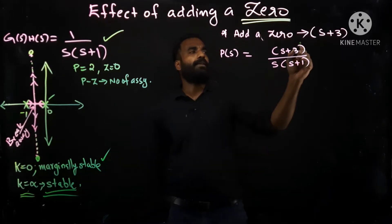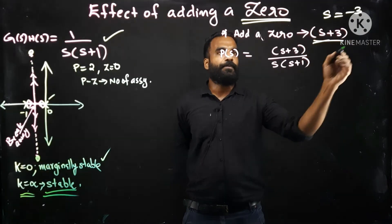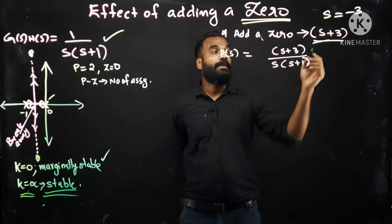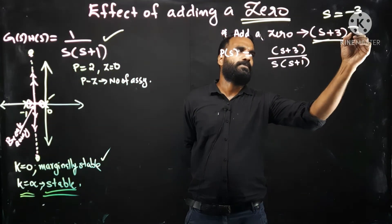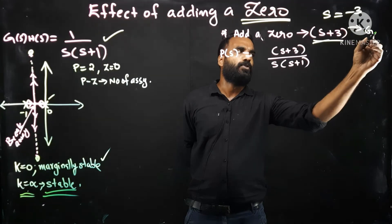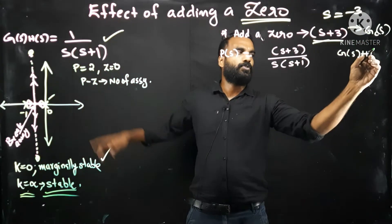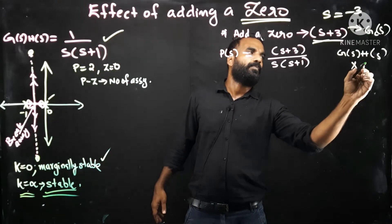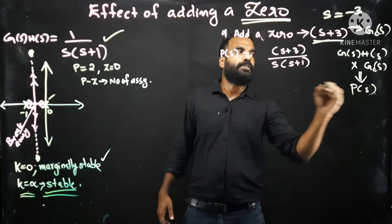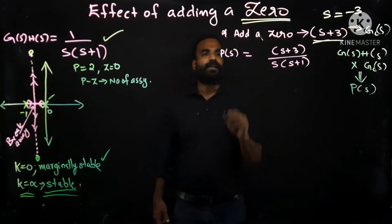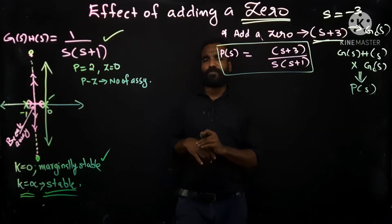Now I am going to add another zero at s=-3, so the factor (s+3) is added to the existing system. This (s+3) may be the transfer function of a controller. We are adding Gc(s) into the existing G(s)H(s) to get the new open loop transfer function. So the new open loop transfer function includes this additional zero.